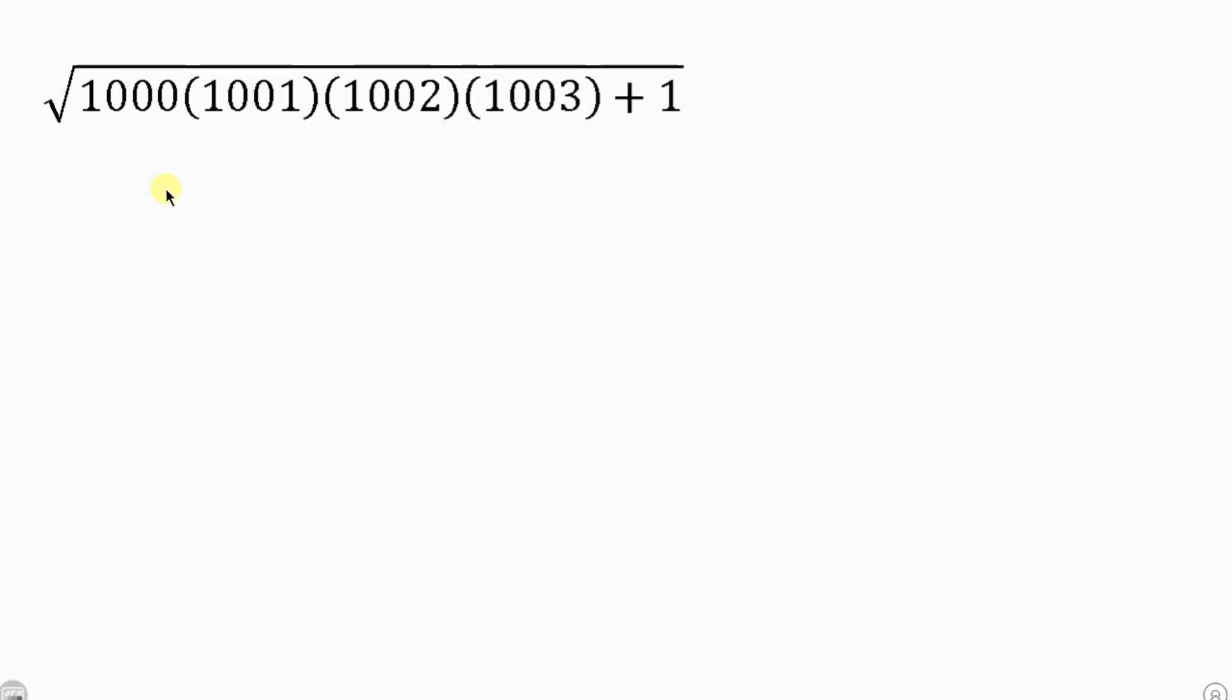If you look at this first term, second, third and fourth, you'll notice that they are consecutive. And because of that, we're going to say let x be equal to the lowest among them which is 1000.